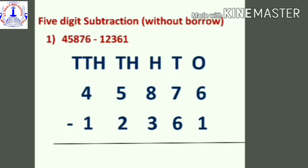Students, in Part 1 video you have already learned four-digit subtraction. Now we are going to learn five-digit subtraction — that is, one digit is added, which is the ten-thousands place. Again you're going to write the digits according to their correct places. You have to subtract the numbers from the right-hand side.